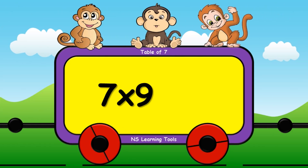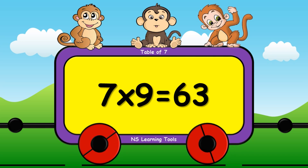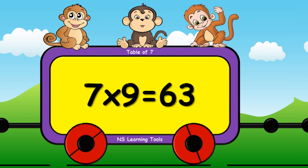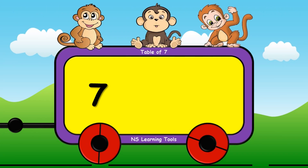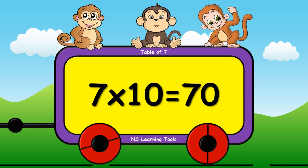Seven nines are sixty-three. Seven tens are seventy.